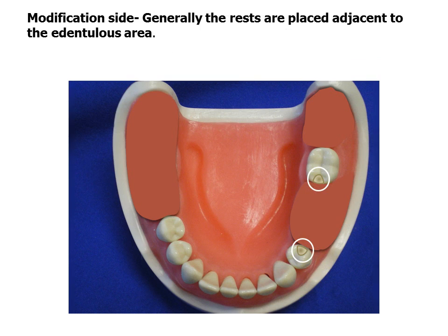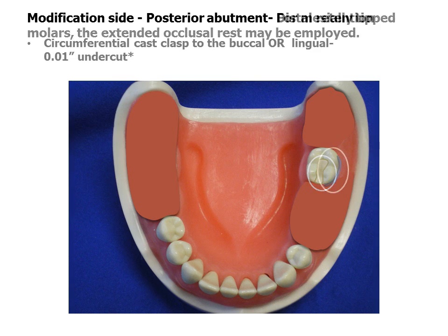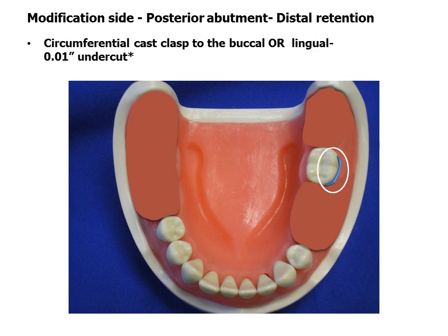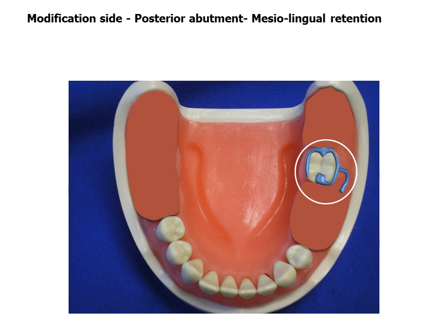Similarly, rests are on the tooth surface adjacent to the modification space. The extended occlusal rest may be used on mesially tipped molars. Distal retention on the molar may be provided by a cast clasp engaging a .01 inch undercut. If the retention is on the mesial, a modified T or ring clasp may be considered.